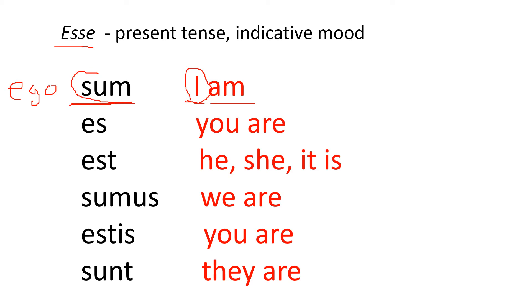Here the second one is es, which means you are, and that's the second person singular. Then we have est, which could be he is, she is, or it is.